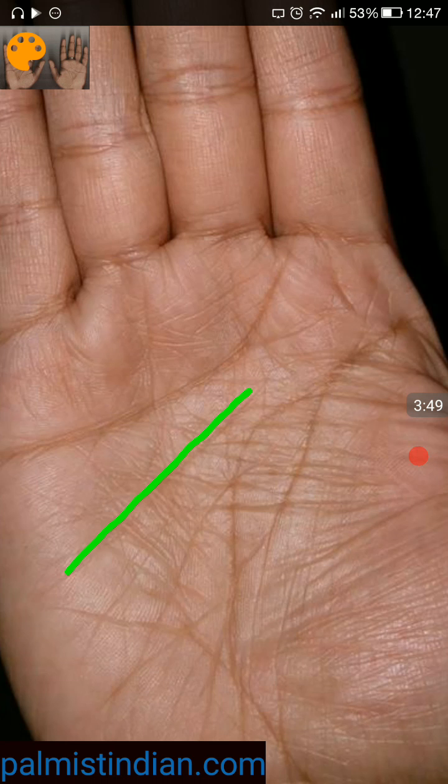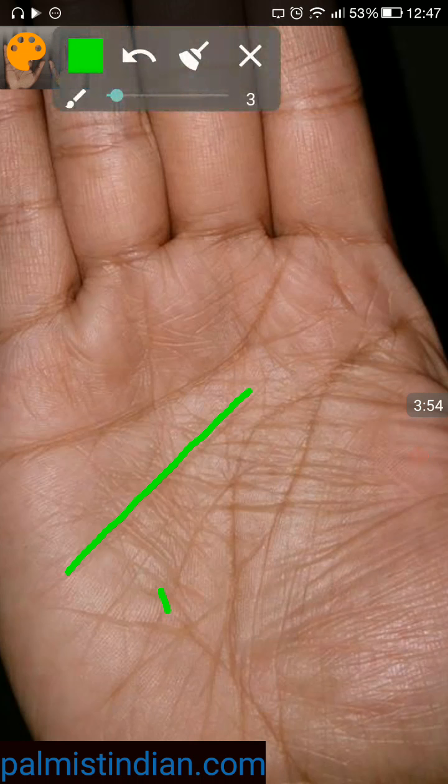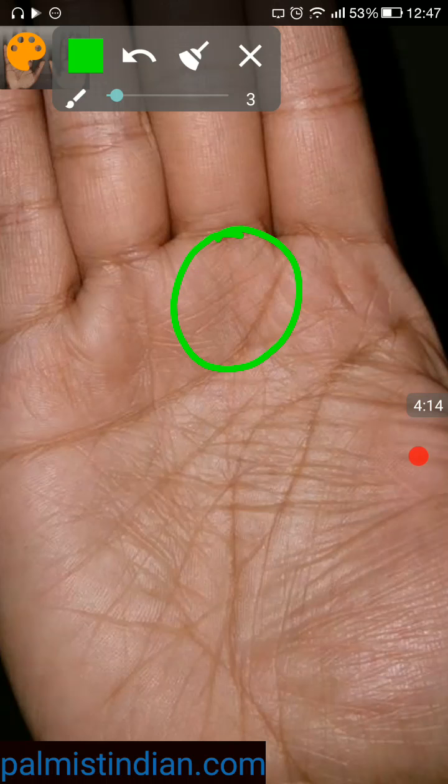He did mention that all his friends are settled, his mother is retired, and he's trying to give a bank and teaching exam but he hasn't got through. So the mount of Saturn basically is the area of delays. If there are too many criss-crossing kind of lines, then basically the person faces delays in his life.